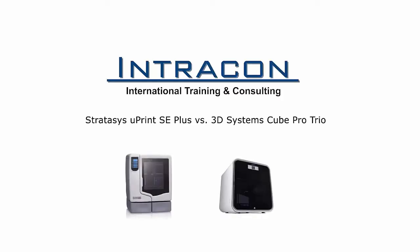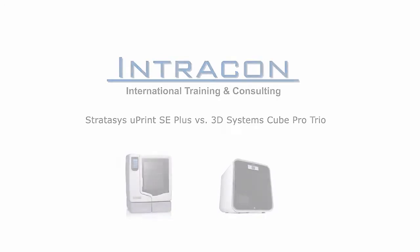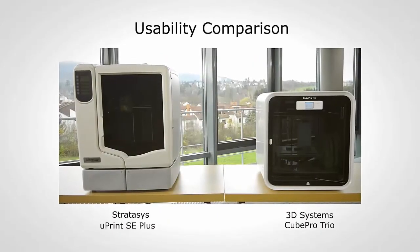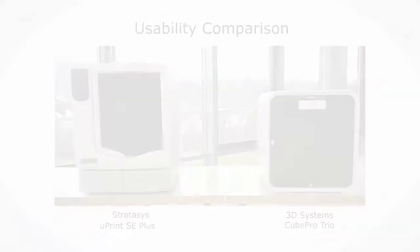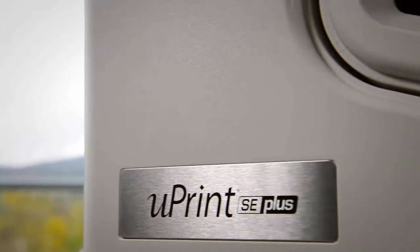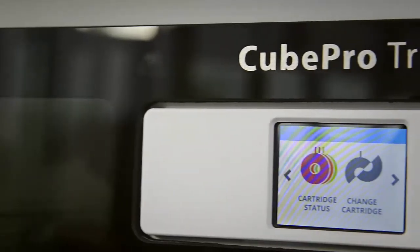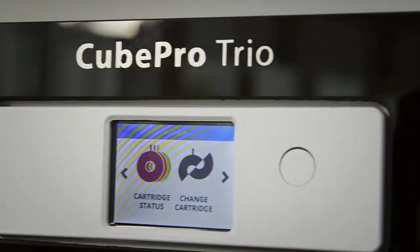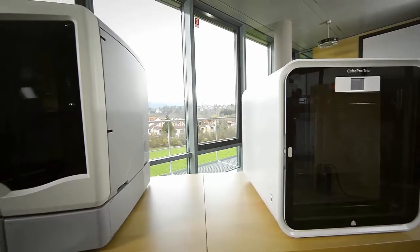Welcome to this Intracom video of the comparison of the Stratasys Uprint SE Plus versus the 3D Systems Cube Pro Trio, which markets at a quarter of the price. During the comparison we will not look into detailed specifications of speeds and feeds, but compare and look at different aspects with regard to real-world usability.